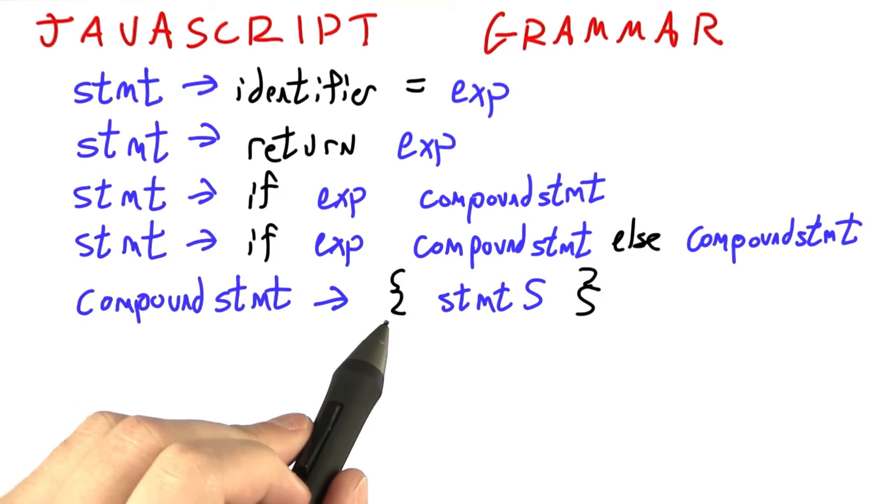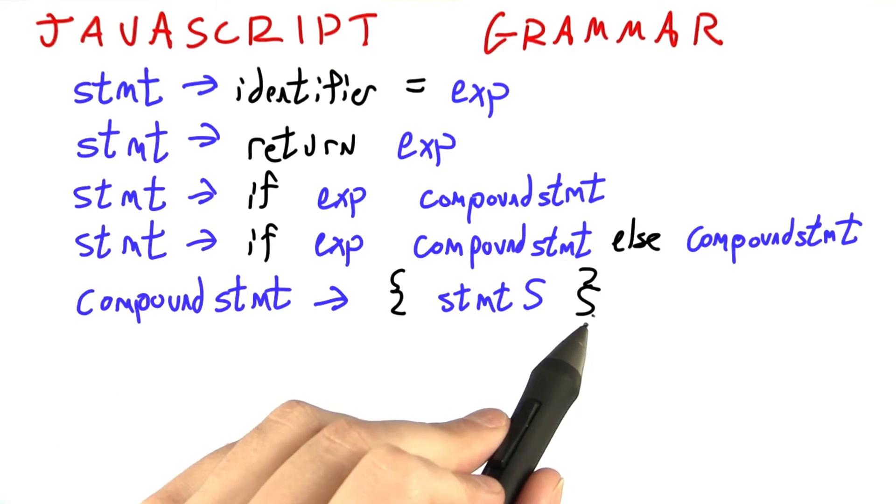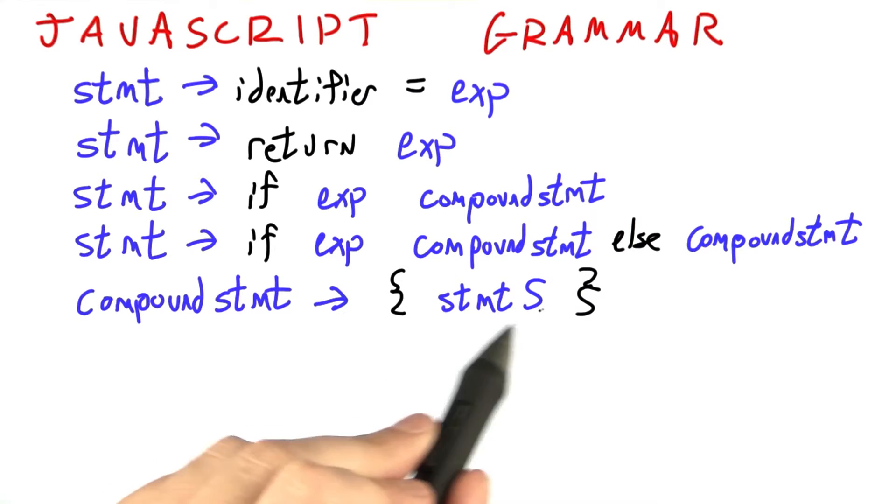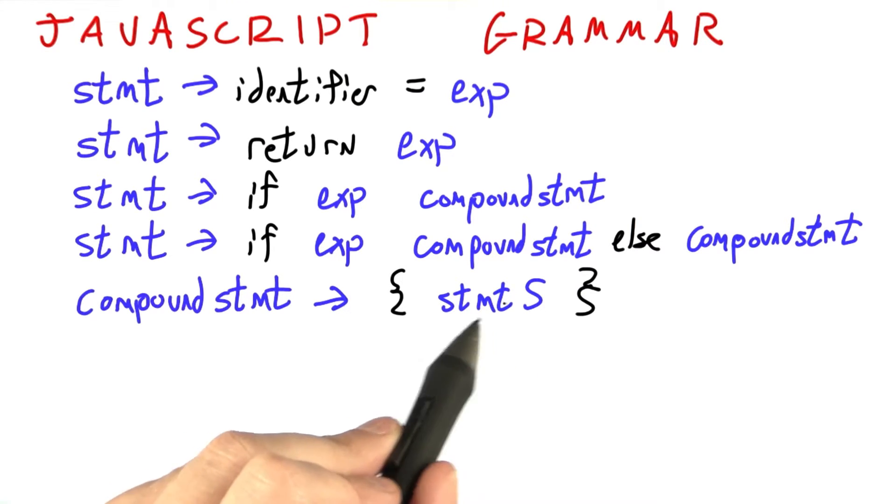So a compound statement is an opening curly brace, a closing curly brace, and some statements in the middle. And this is a list of statements terminated by semicolons. I'm going to show you how that works.